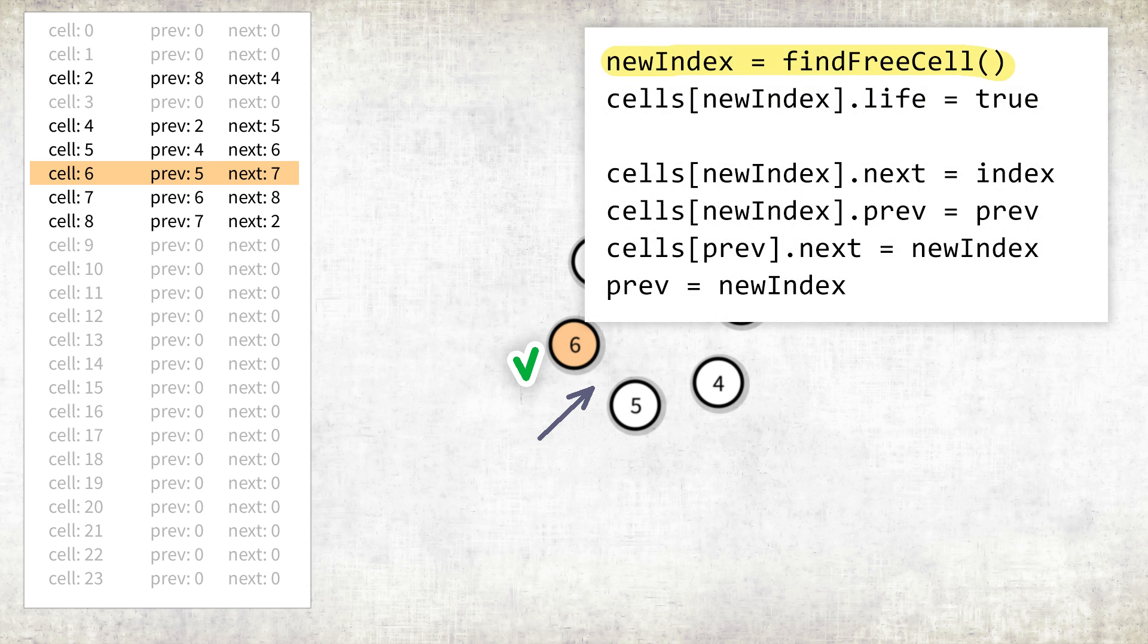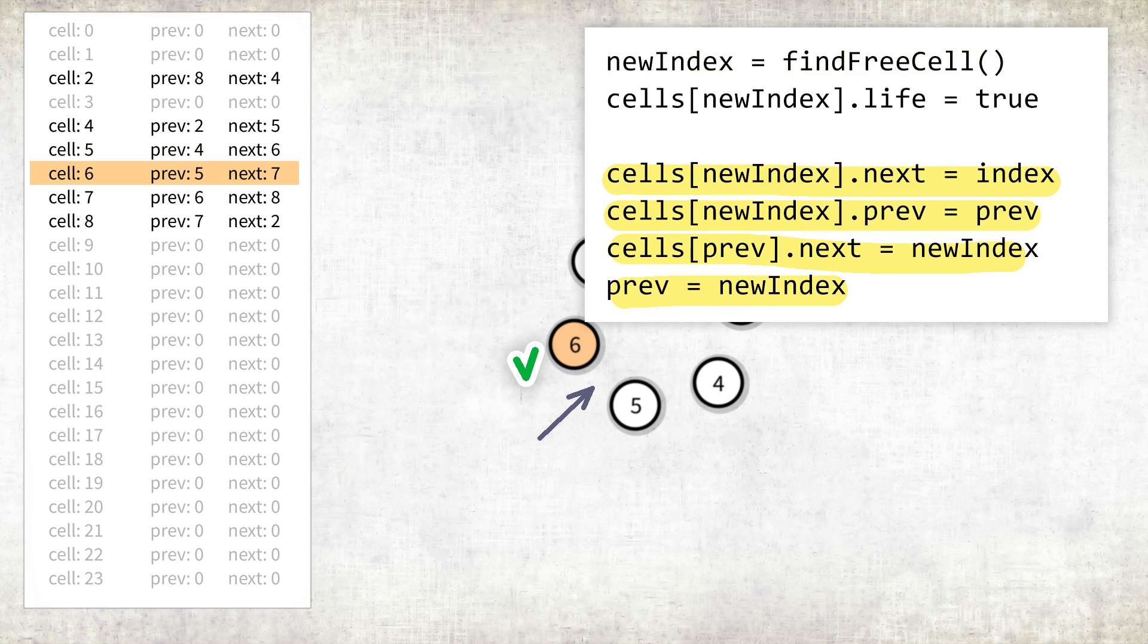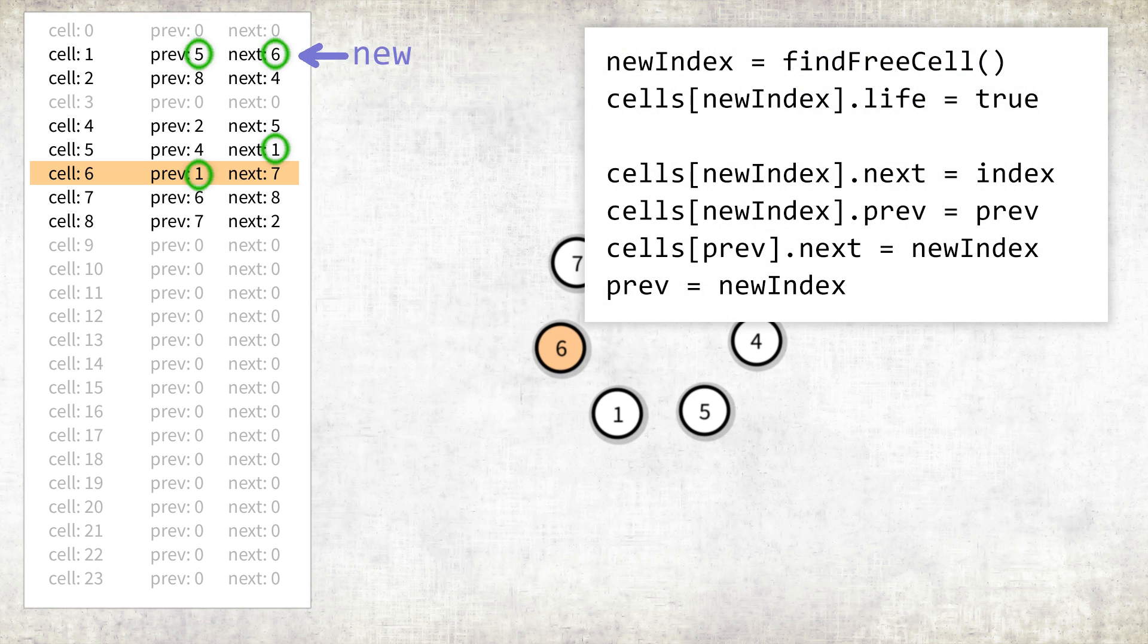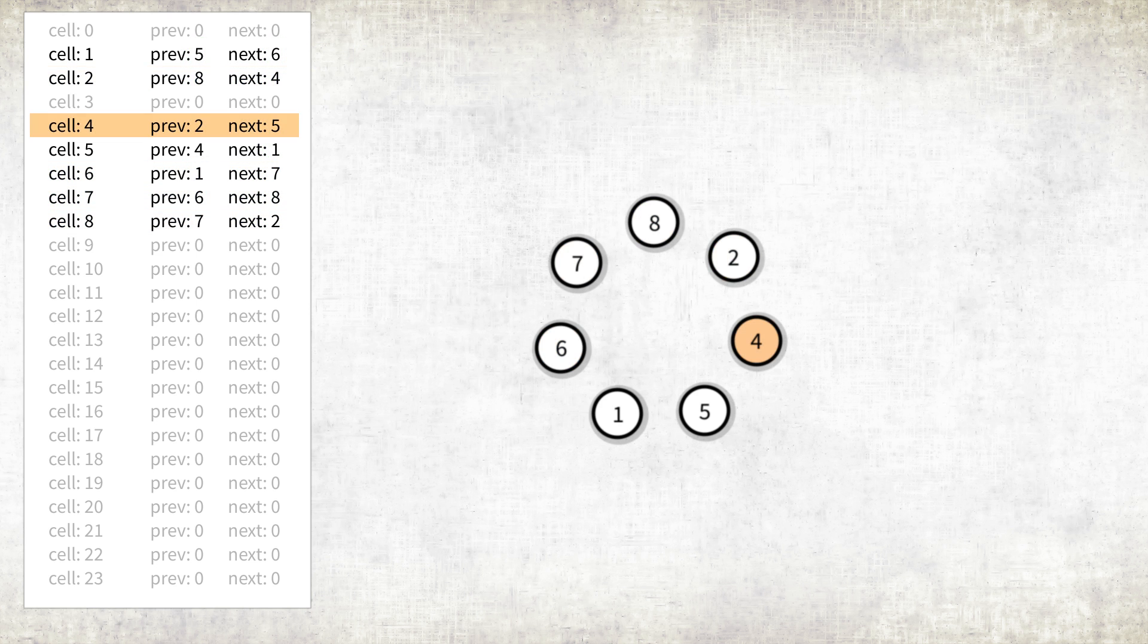First, we find an unused cell in the list and update all the references. I think this is the most optimal way to do this. This way none of the newborn cells will have an advantage over other newborns.